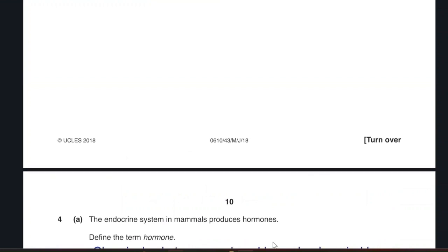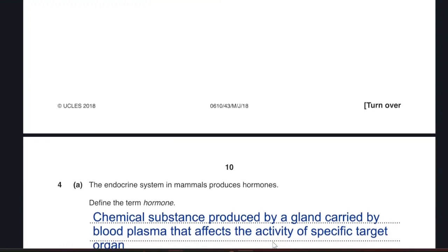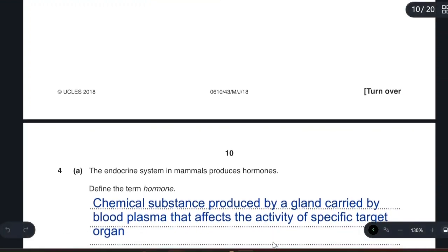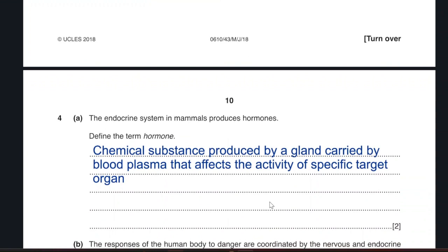Question 4. The endocrine system produces hormones. Define the term hormones. It is a chemical substance produced by a gland carried by blood plasma that affects the activity of a specific target organ. Chemical substance produced by a gland carried by the blood affects the activity of a specific target organ.